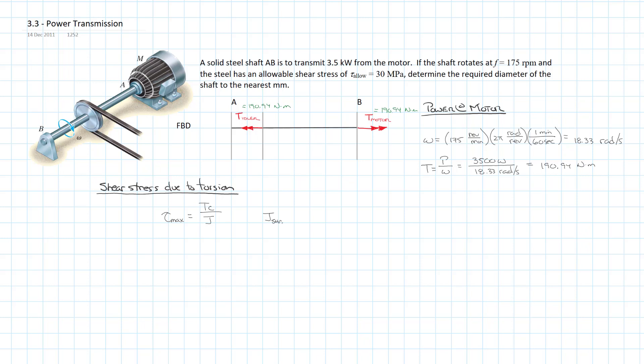If we combine these algebraically, we can determine that our tau max equals 2 times the torque divided by π times the radius cubed.